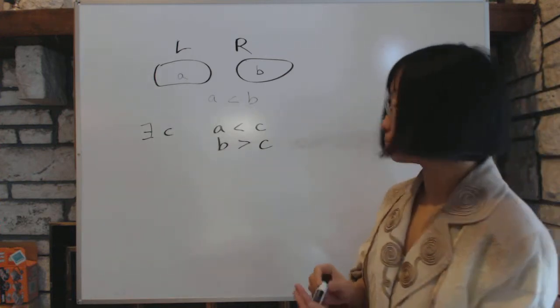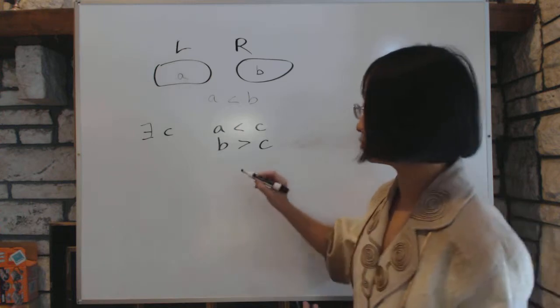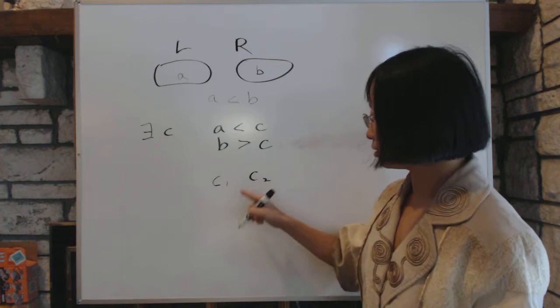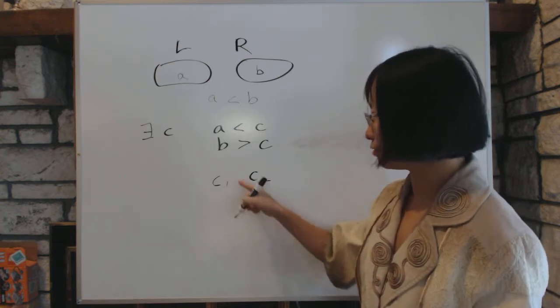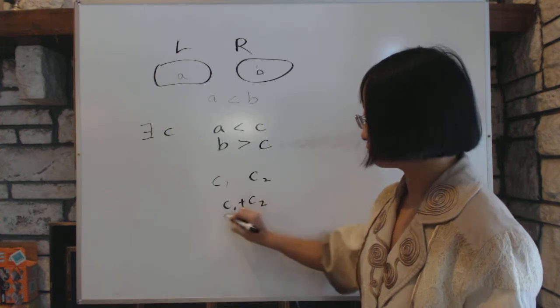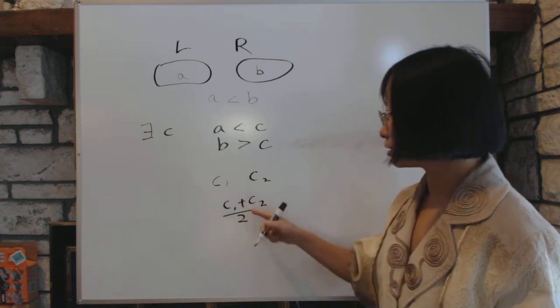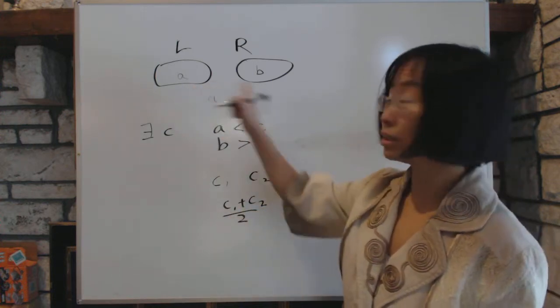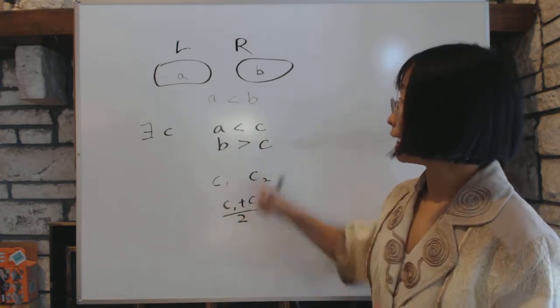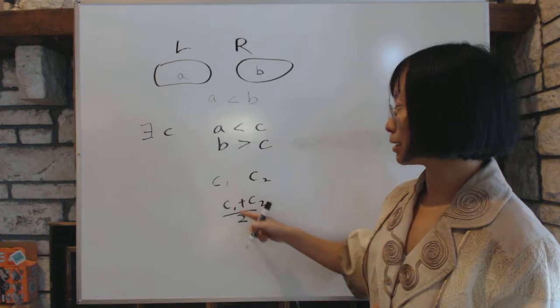C is unique because if you have two Cs, say C1 and C2, then you can come up with the average of C1 and C2 by doing (C1 + C2)/2. And where does this belong? Does it go into L or does it go into R? Because it's bigger than C1, it has to go into R. Because anything bigger than the cut belongs to the R side.